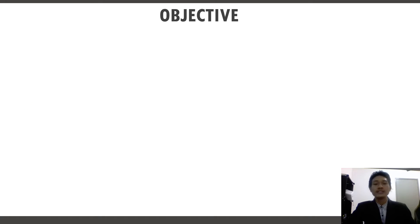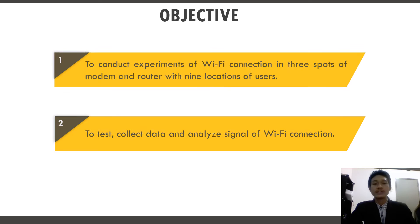The objectives of this project are: first, to conduct an experiment of Wi-Fi connection across 3 spots of modem and router with 9 spots of user testing; and second, to test, collect data, and analyze Wi-Fi connection performance in a double-story house.